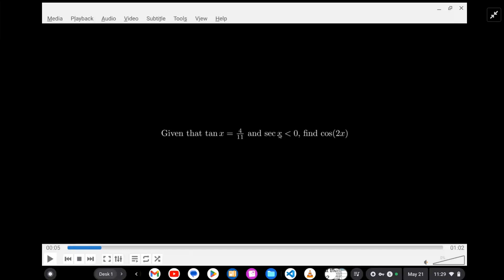That could be quadrant 1 or 3, and then we're told that the secant is negative, so that could only be quadrant 3.